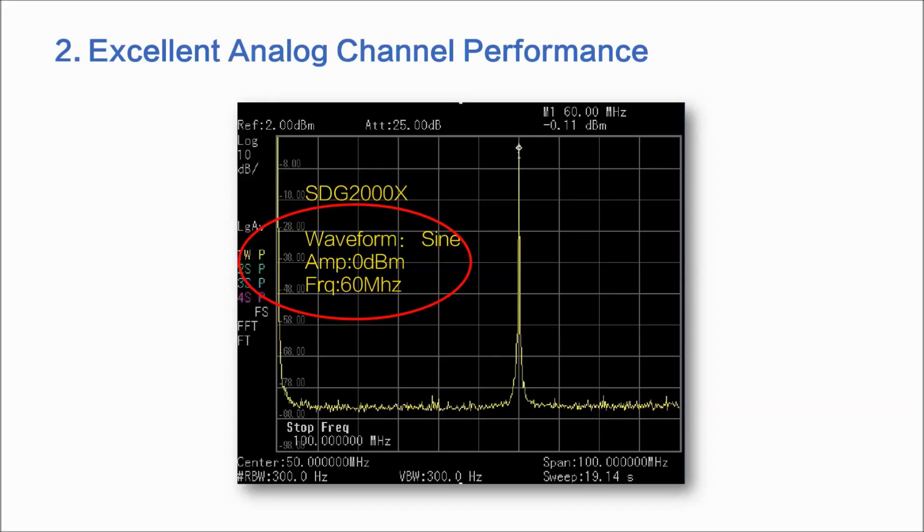The SDG2000X has high fidelity sine wave output. Almost no spurious waveforms are observed at a frequency of 60 MHz and an amplitude of 0 dBm.